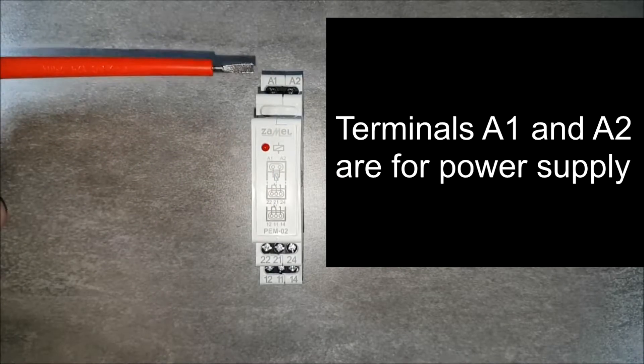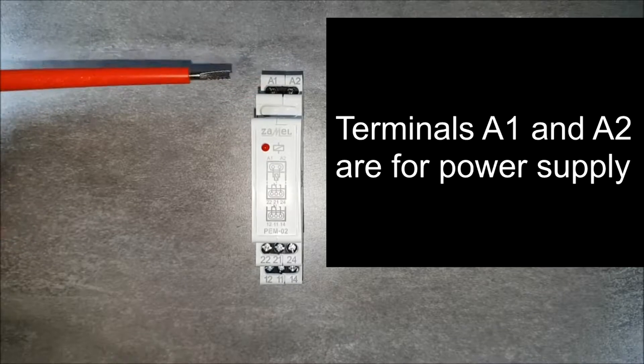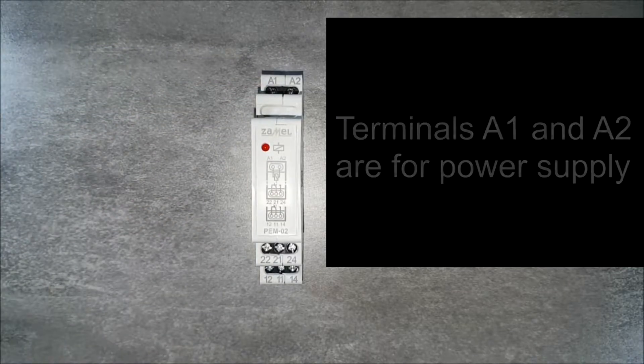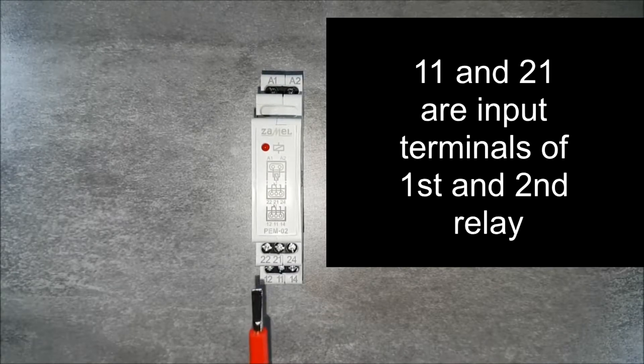PEM02 relay is powered by mains voltage. Supply voltage is connected to terminals A1 and A2, which are terminals of the relay coil. The relay contacts are located at the bottom of the device. They provide the output of two 16A relays, galvanically separated.